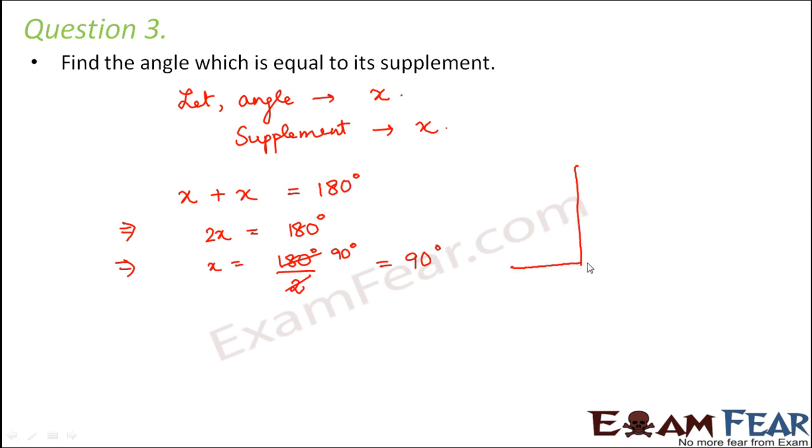So basically, if you have a right angle like this, 90 degrees, the other angle would also be 90 degrees. So the angle and its supplement are equal.